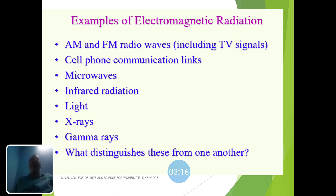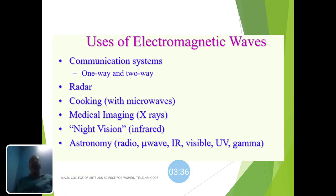Electromagnetic waves radiate as microwaves, infrared radiation, light, X-rays, and gamma rays. What distinguishes one from another? What differentiates them is the frequency. These are the uses of electromagnetic waves.